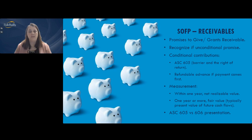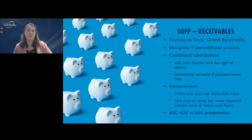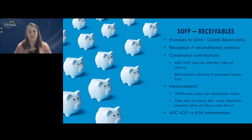Cost reimbursement grants are not always conditional. What's important when looking at a conditional contribution is that the recipient has limited discretion over how the activity is conducted. Limited discretion is more specific than a donor-imposed restriction — a restriction specifies an activity or time but doesn't limit how it's performed. Examples of limited discretion include requirements to follow specific guidelines, qualifying expenses in a specific way, or hiring a specific person. For federal grants, that would be a condition because you're following uniform guidance that is very specific.